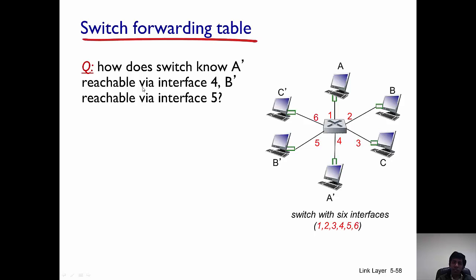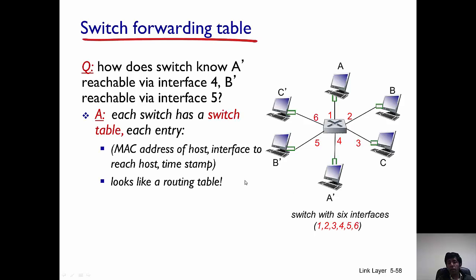But the biggest question is, how does the switch know that A' is reachable via interface 4 and B' is reachable via interface 5? We know that A is going to send out its frame along interface 1. A believes that A' can be reached along interface 1. In the middle, the switch is going to intercept that frame and it's going to forward this frame along interface 4 through which it can reach A'. The question is, how does the switch know that A' is reachable by 4?